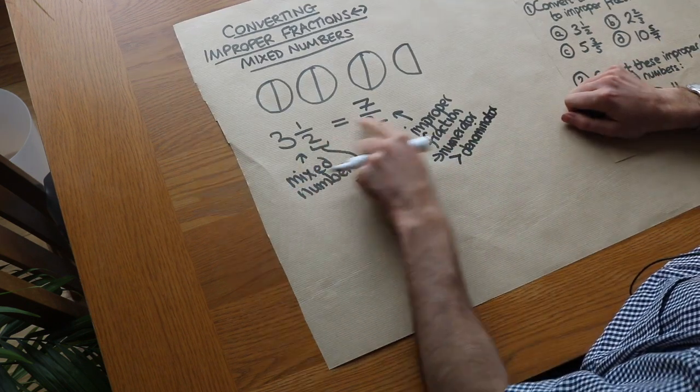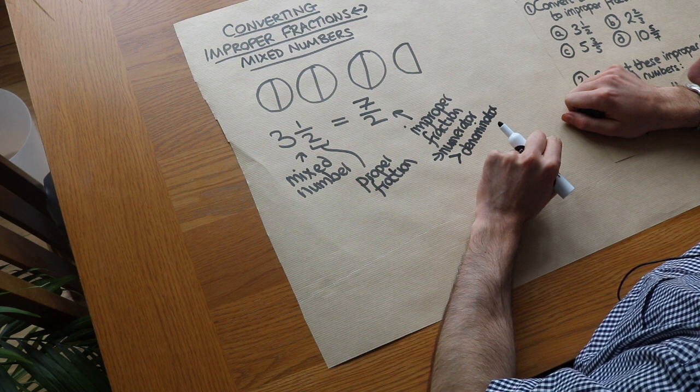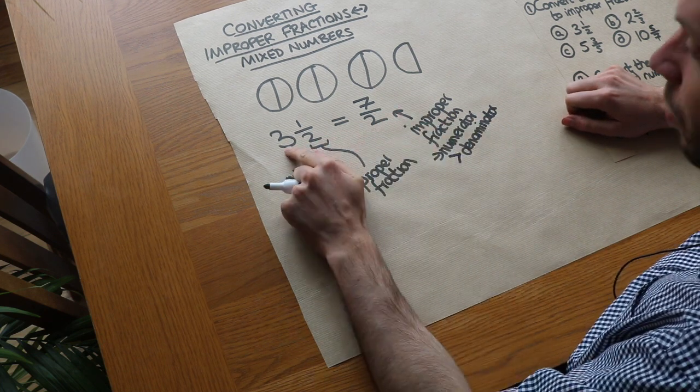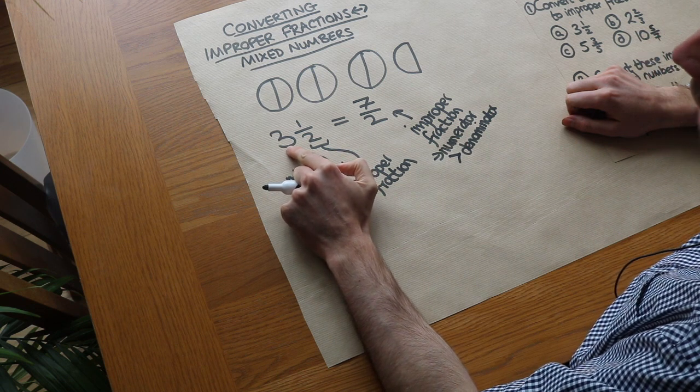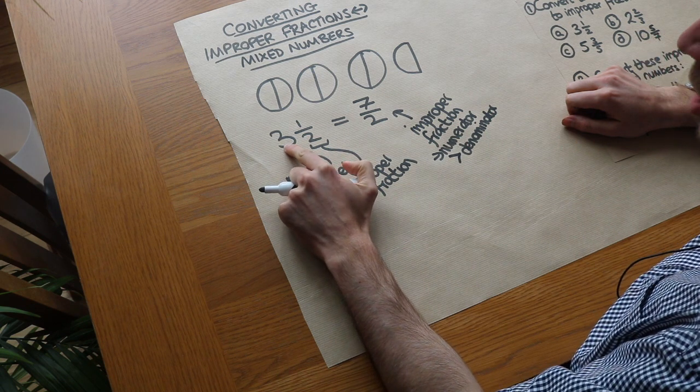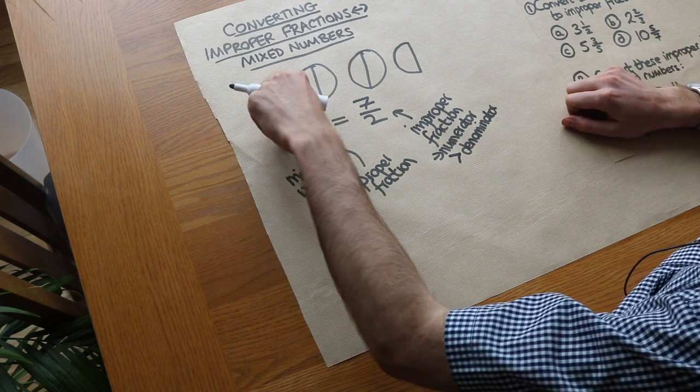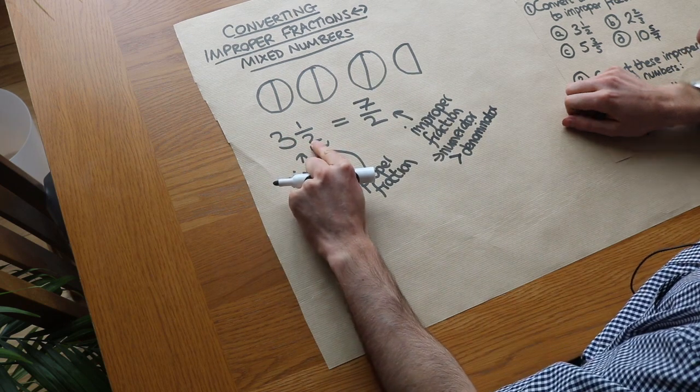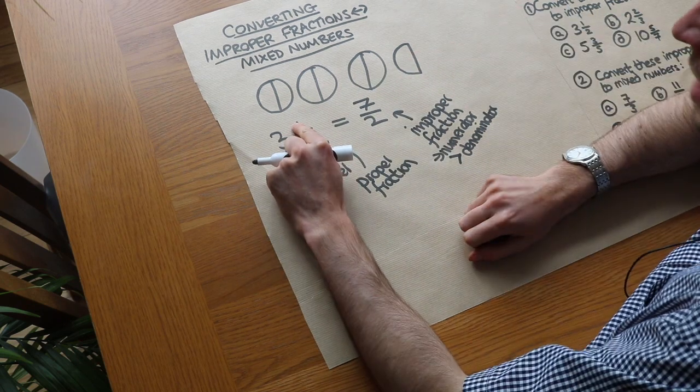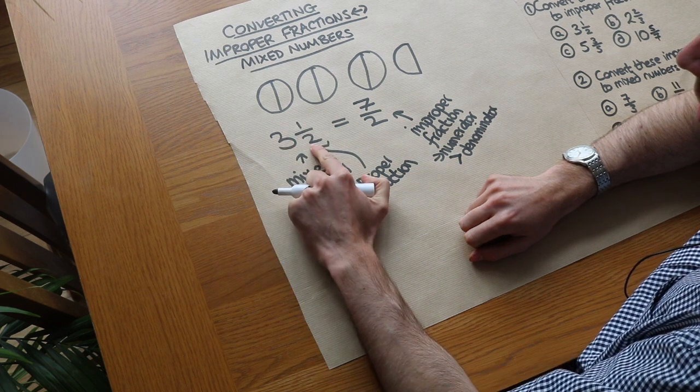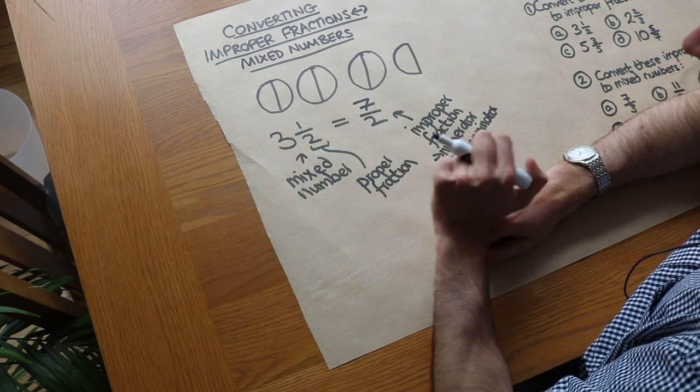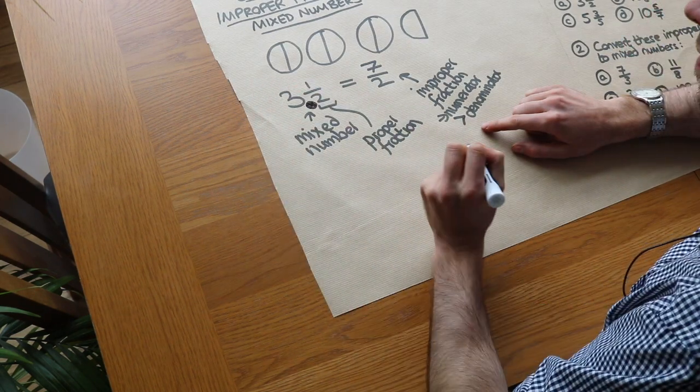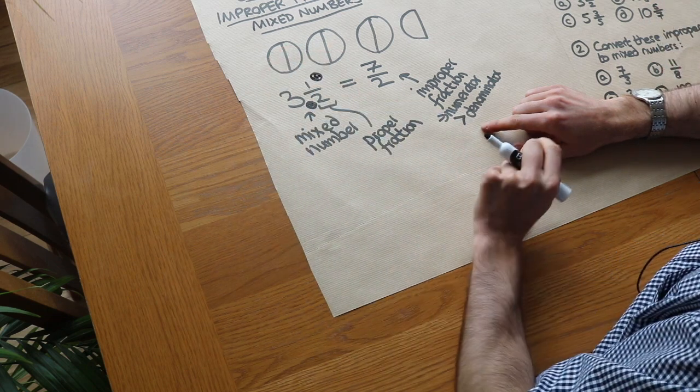Now in this video we're going to explore how we can convert between these two forms. Now if we had three and a half pizzas, how would we work out how many halves we had? Well in the three pizzas, how many halves did we have? Well we had six halves, and we got that by doing the three times the two. So in the three whole pizzas we had six halves, that's the three times the two, and then we had that extra half, so we added on that one. So three times two plus one gave us that seven.